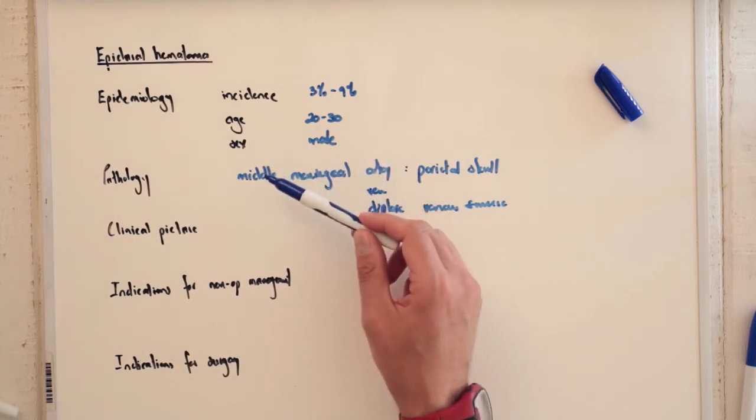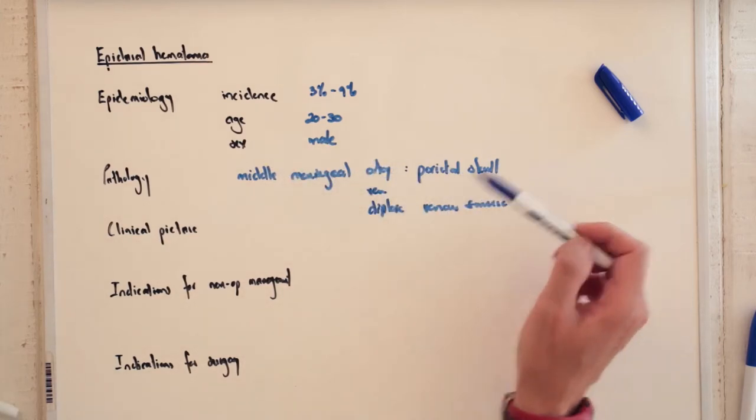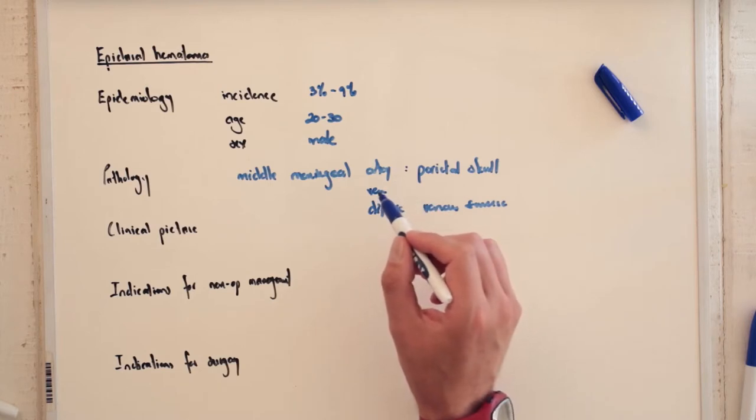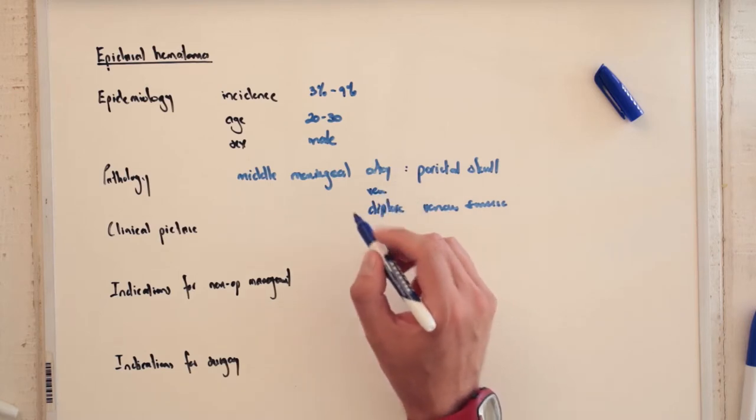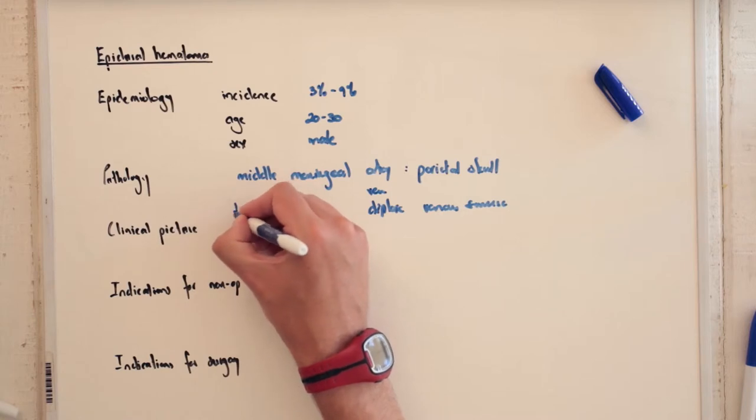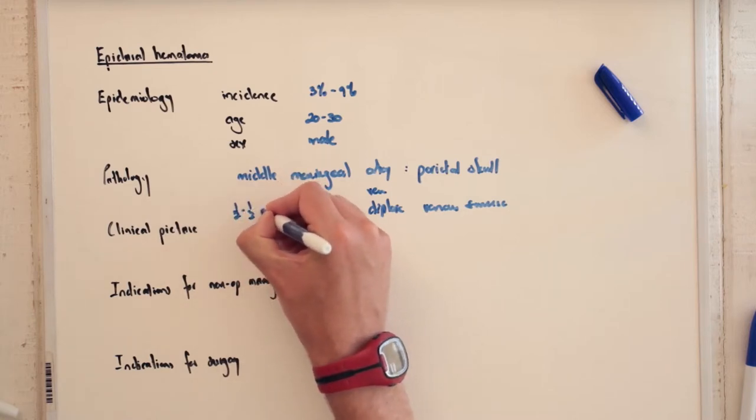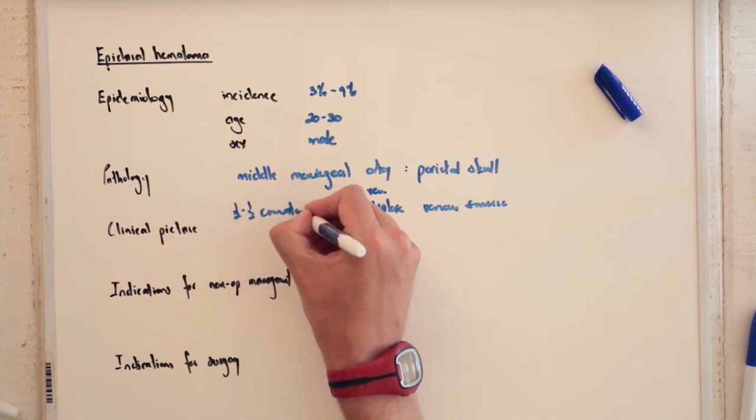But most commonly it is the middle meningeal artery with an overlying parietal skull fracture. What is the clinical picture? Well about one half to one third of these patients will be comatose when they come in.